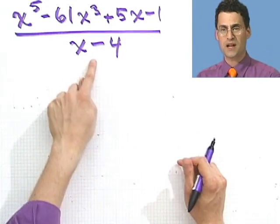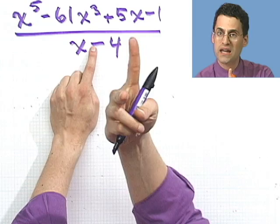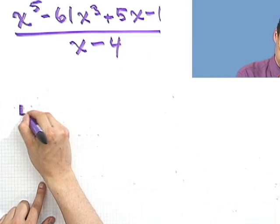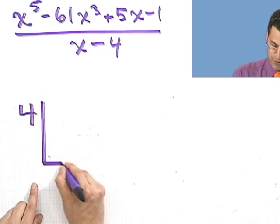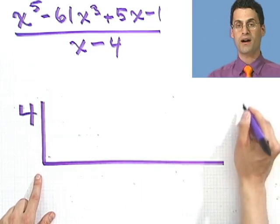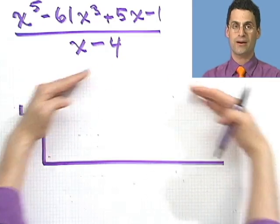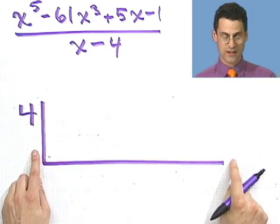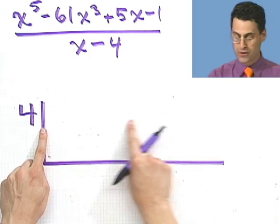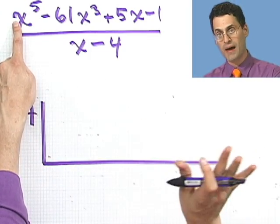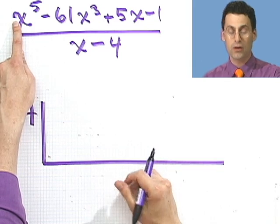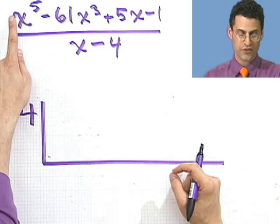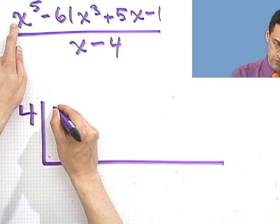Step one: you write down this number but flip the sign. So instead of minus 4, I'm going to write plus 4. Then you draw this little half-box. Now I'm going to run through and just report the coefficients — that's all that matters. If a term isn't represented, we have to put in a 0 as a placeholder. So I see 1x to the fifth, so I put a 1 here.